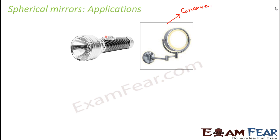Let's look at the next example — a torch. What kind of light comes out of it, and what kind of mirror is present inside it? Obviously, the type of mirror present inside is again a concave mirror. Why? Because a concave mirror acts as a converging mirror. Inside the torch you have a mirror and also a lens, and all of these combinations together help to spread the light the way it spreads.